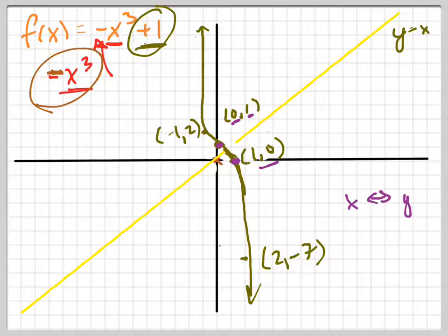Negative 1, 2 becomes 2, negative 1. So, 2, negative 1 is on this graph. And, 2, negative 7 becomes negative 7, 2. And so, hopefully that can give you an idea of what the graph looks like. Here's your graph. There's the graph of your inverse function right there. And notice I did say function because you'll see that that purple graph is a function as well.